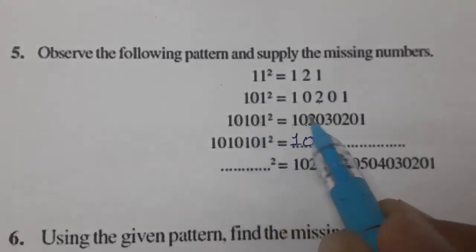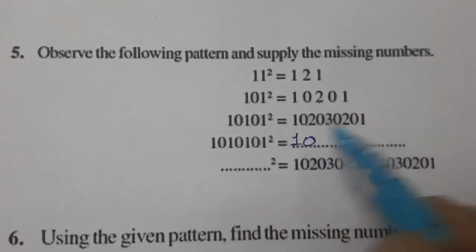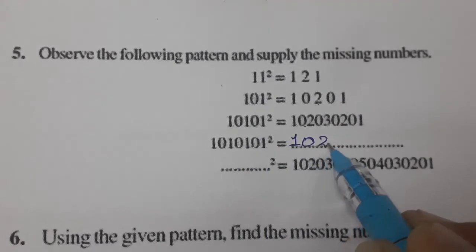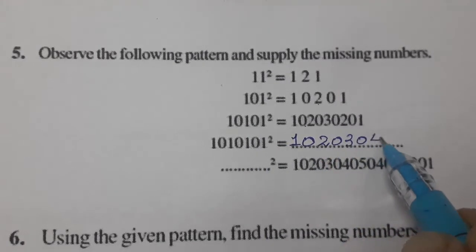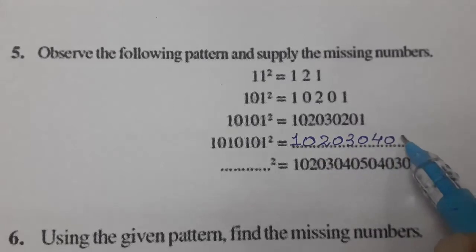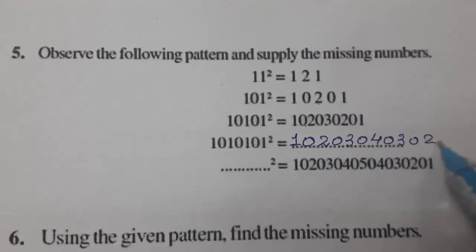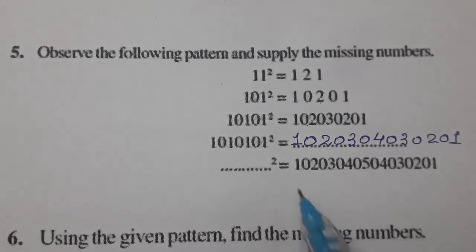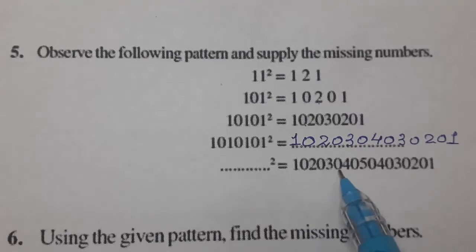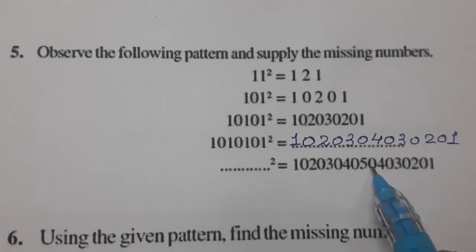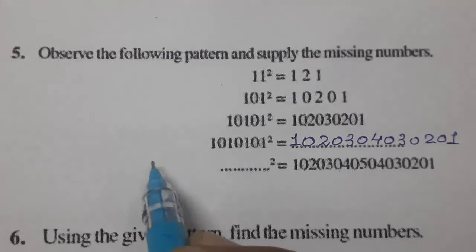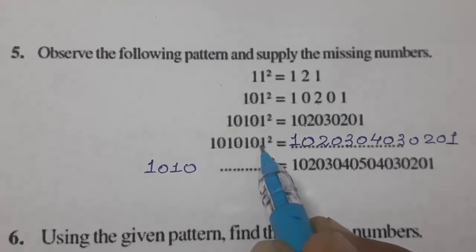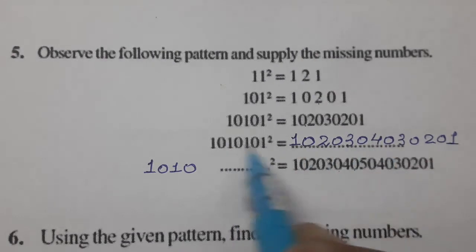Following the pattern up to three: three zeros, then descending. Next one: 1 zero 2 zero 3 zero 4 zero — then descending: 3 zero 2 zero 1. Then the next: 1 zero 2 zero 3 zero 4 zero 5 zero — and the answer will be: 1 zero 1 zero, then 1 2 3 zero 4 3 zero descending.